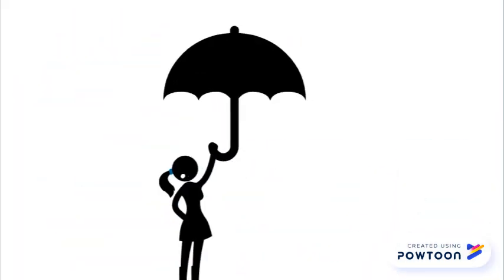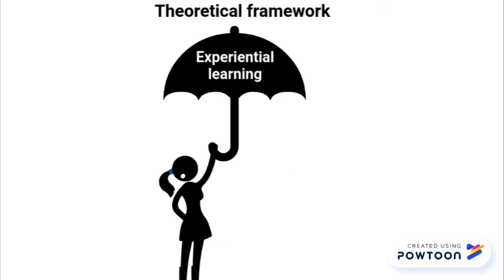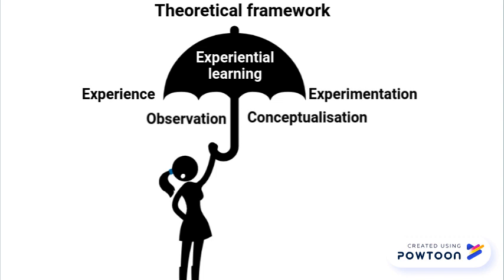Imagine you are conducting a study using the theoretical framework of experiential learning to understand a particular learning activity. The theoretical framework is composed of four concepts, represented by the spikes in the picture. Each of these spikes represent a key part of the theoretical framework that will be used later to analyse the data obtained from the research project.